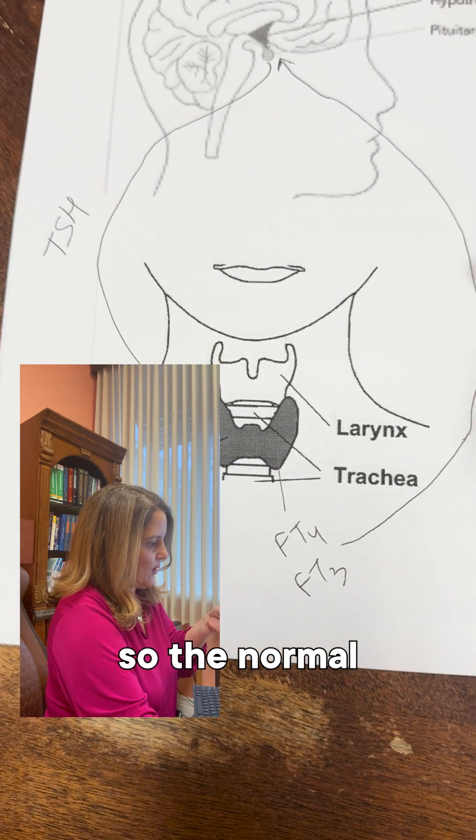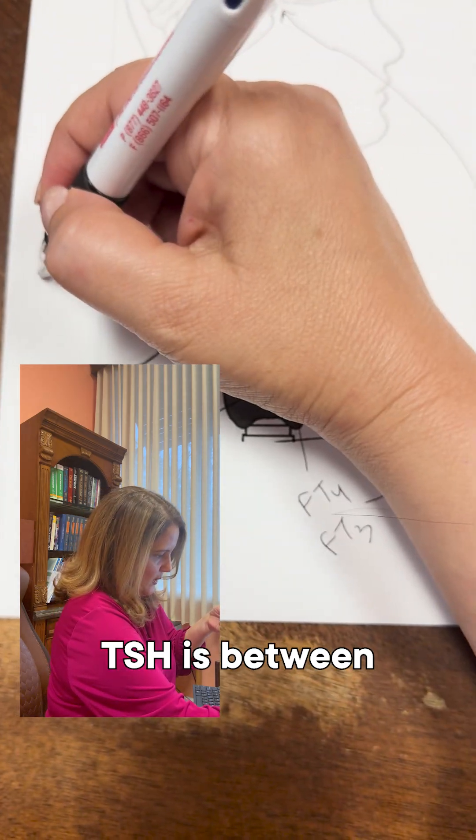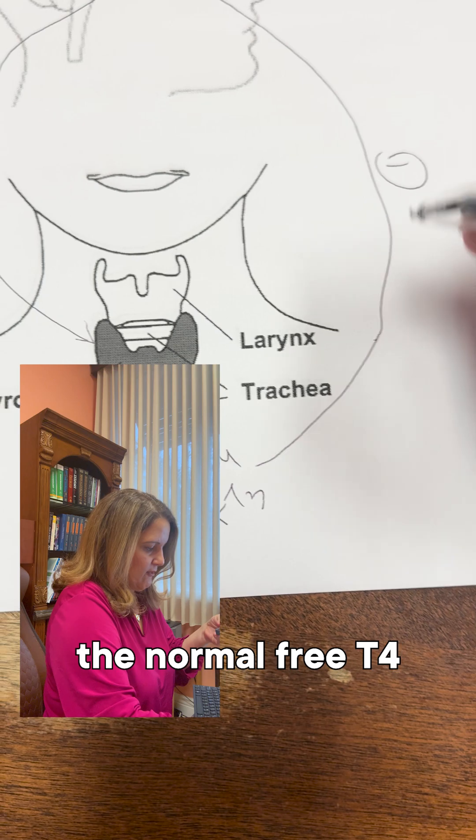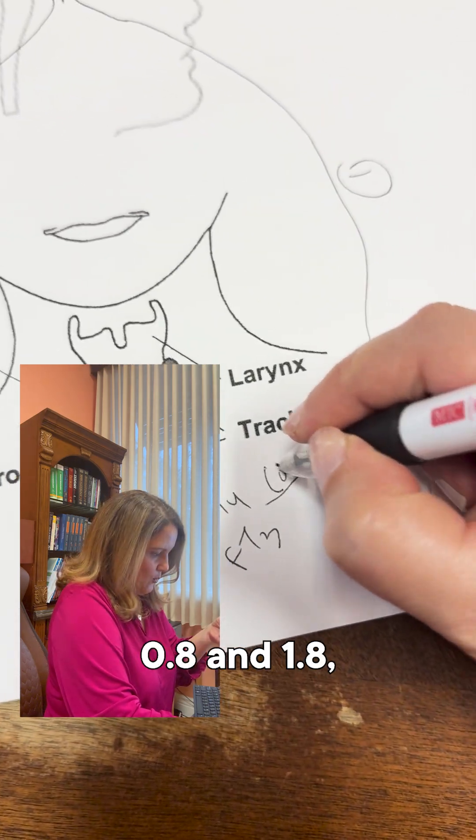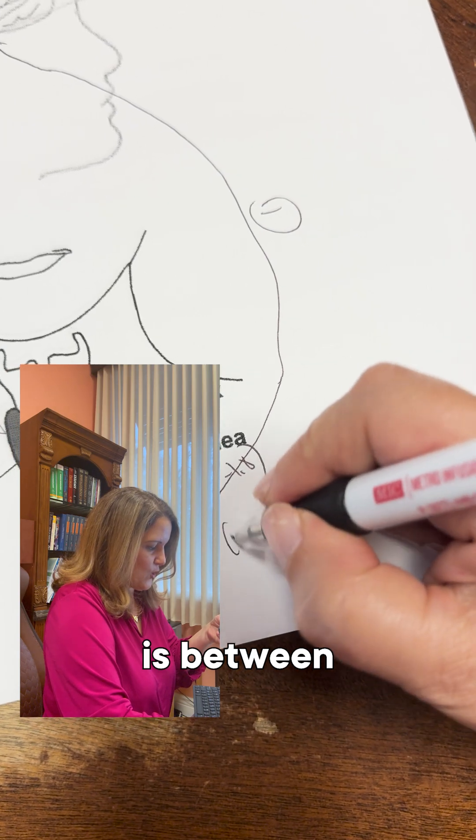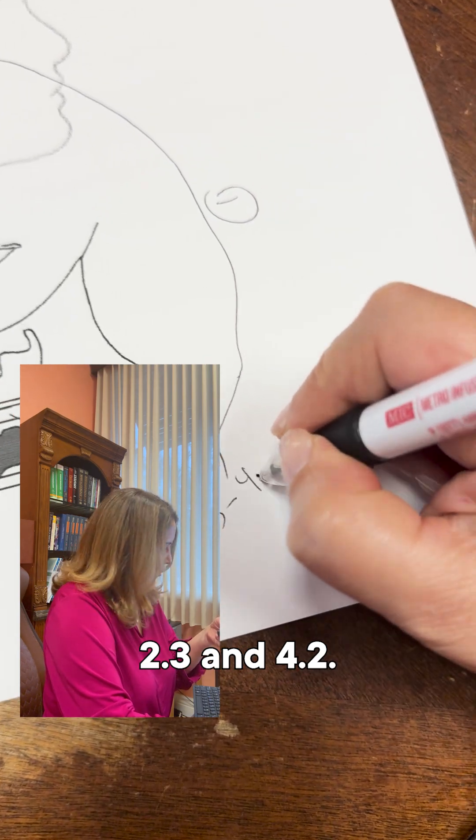So the normal TSH is between 0.4 and 4.5. The normal free T4 is between 0.8 and 1.8, and the normal T3 is between 2.3 and 4.2.